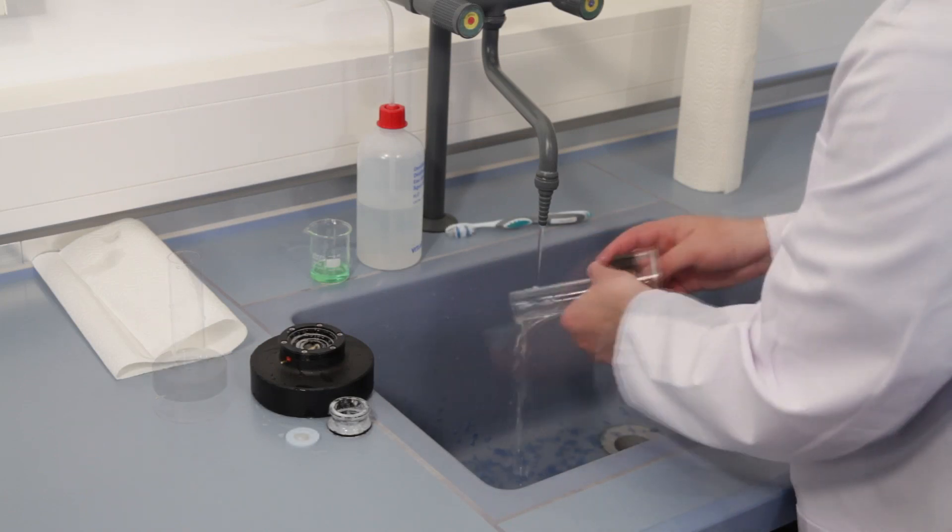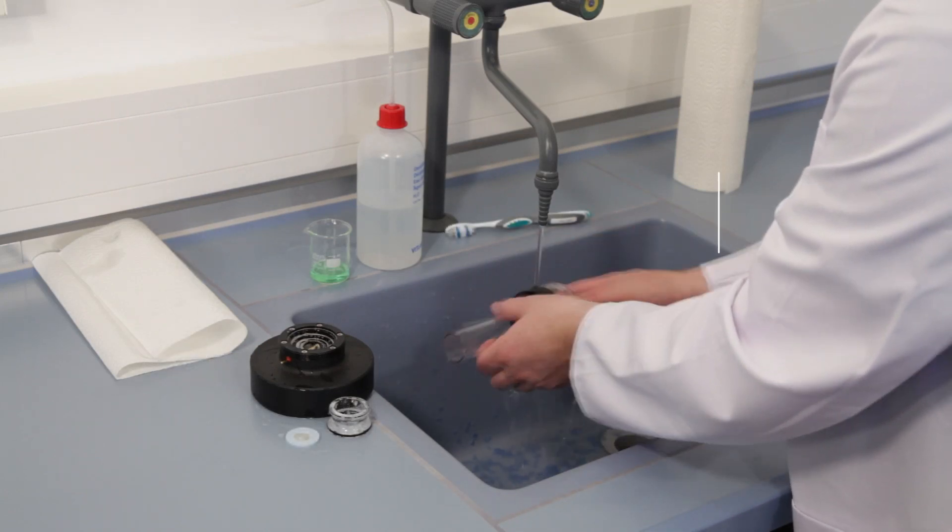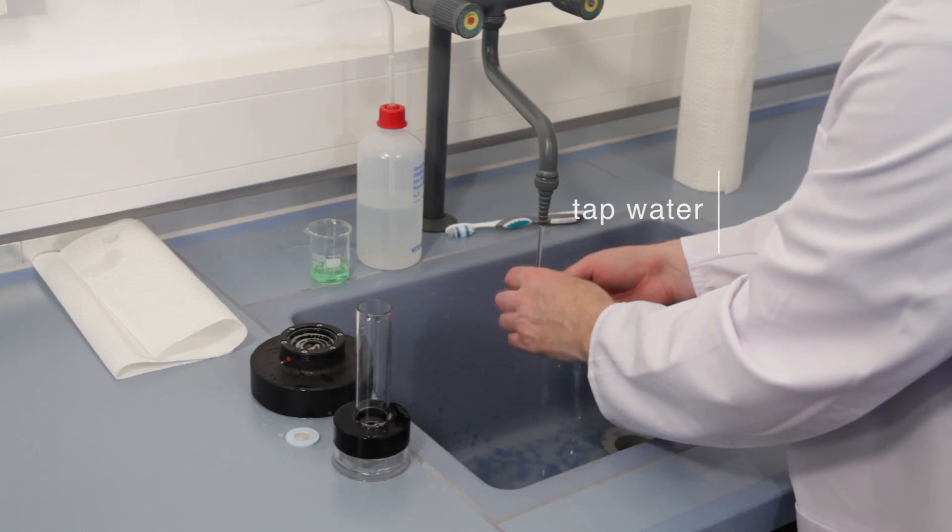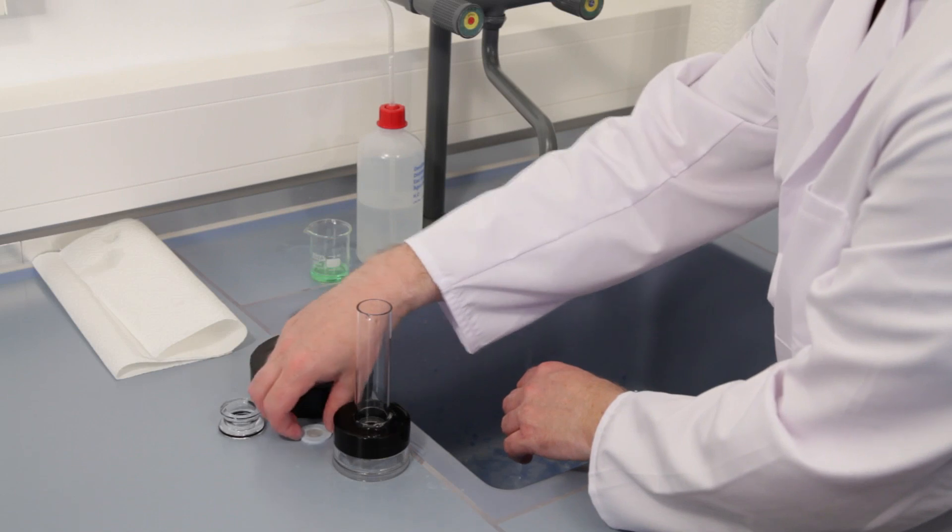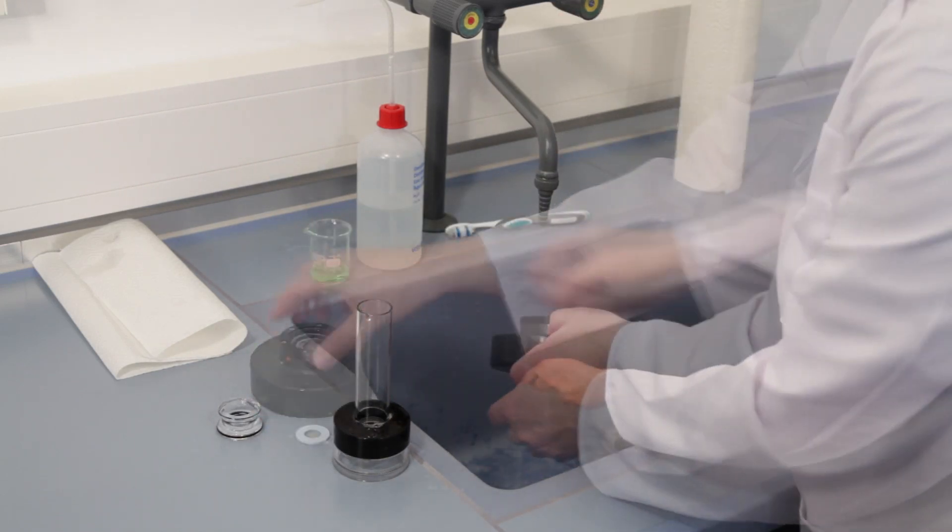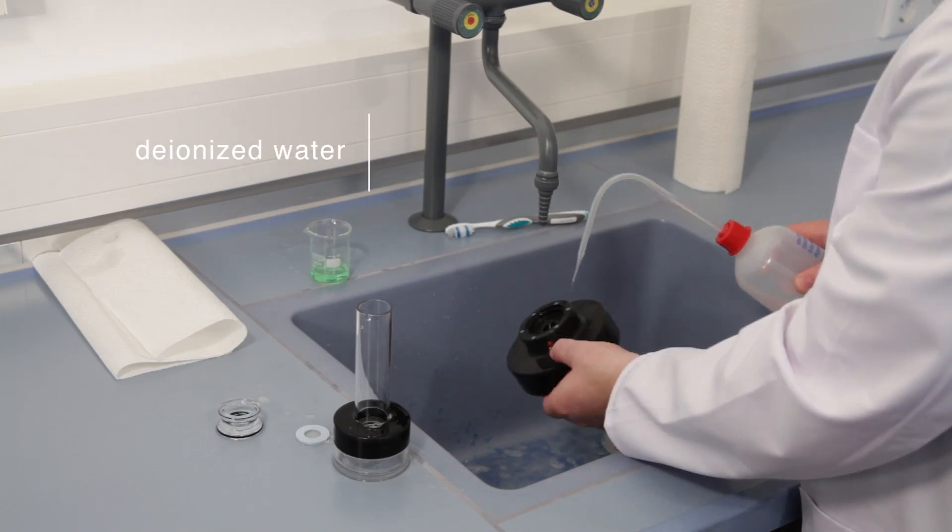Again, flush all parts under tap water thoroughly to remove residuals of the dishwashing detergent. Flush all parts with deionized water.